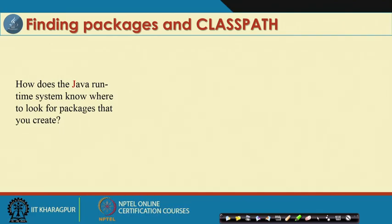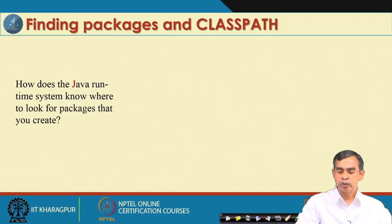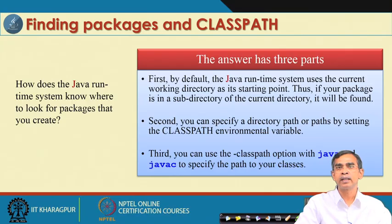First, whenever you are running a program, how can your Java runtime interpreter understand which package is located where? In order to give this information, you can set the class path. Class path is basically a system environment variable in any operating system — Windows, Unix, or macOS — there is a way of setting the path. The class path variable should tell where your packages are located. Whenever you refer to a package, the Java runtime interpreter will consult this class path and get the exact location.